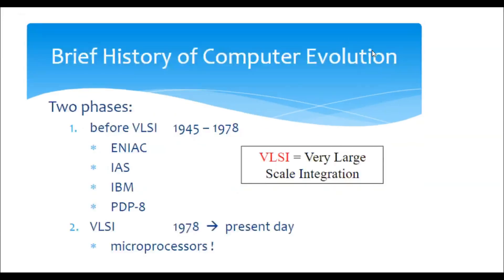Let us start with the deep history of computer evolution. We have two phases: first, before VLSI — which stands for Very Large Scale Integration — covering 1945 to 1978, and second, the VLSI phase from 1978 up to the present day. In the first phase, the first general-purpose programmable electronic computer was the ENIAC.